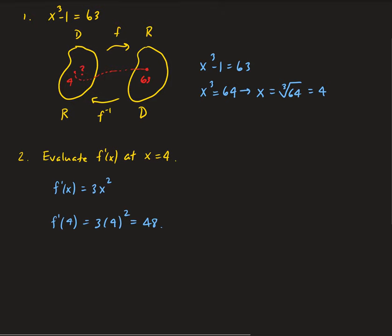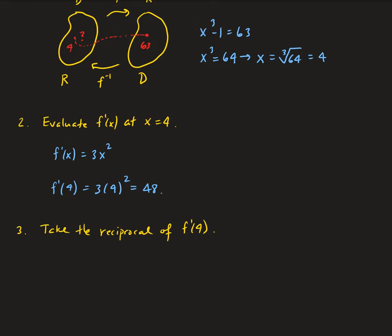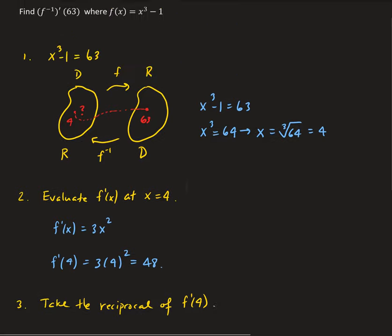So the third step is to take the reciprocal of that. You take the reciprocal of the derivative evaluated at that point. So this is going to give us our result.